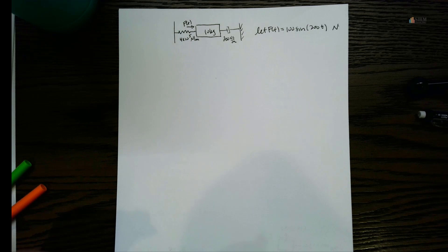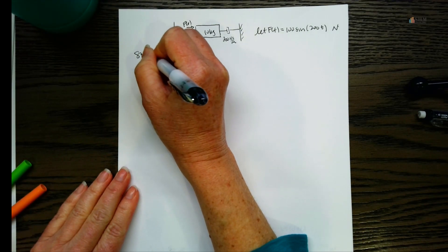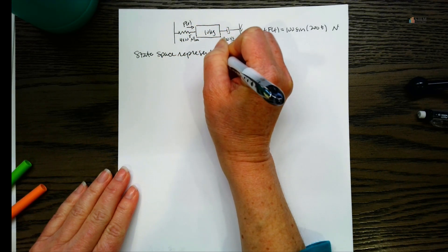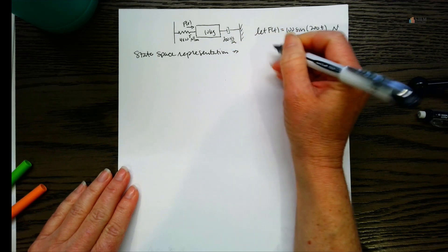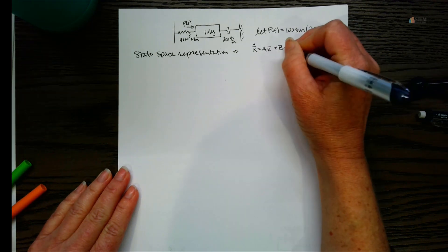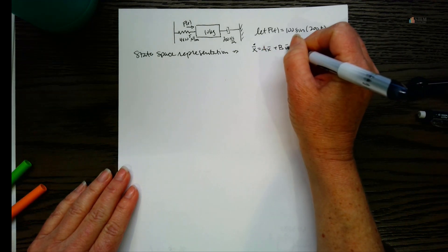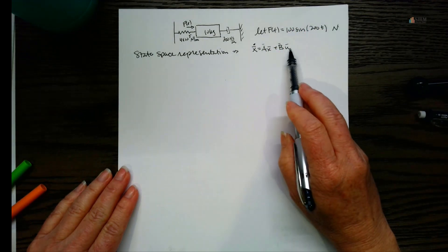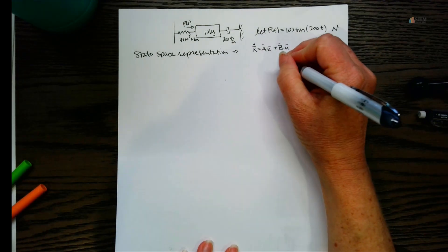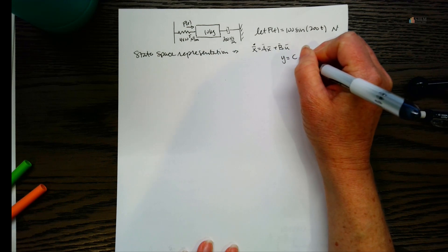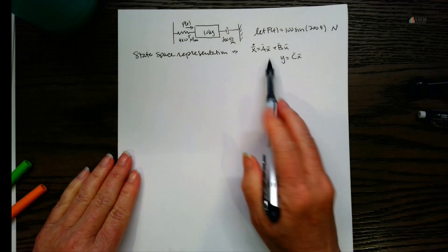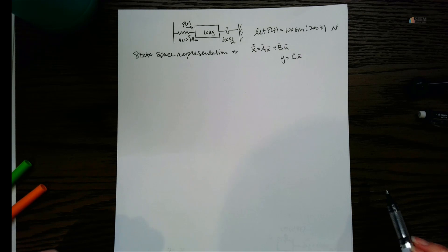We want to write this state space representation. Remember we have the basic state space equation: x dot equals A times x plus B times u — where the bars indicate vectors or matrices. And then we have an output equation which is y equals C times x.